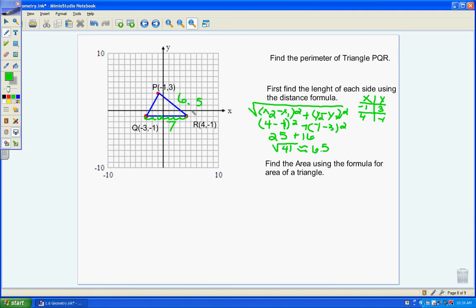We will now use the distance formula, exact same steps, but this time we want to find the length of PQ. So same formula, but our points this time: for point P we have (-1, 3), and point Q is (-3, -1). So we would have -3 minus -1 squared...